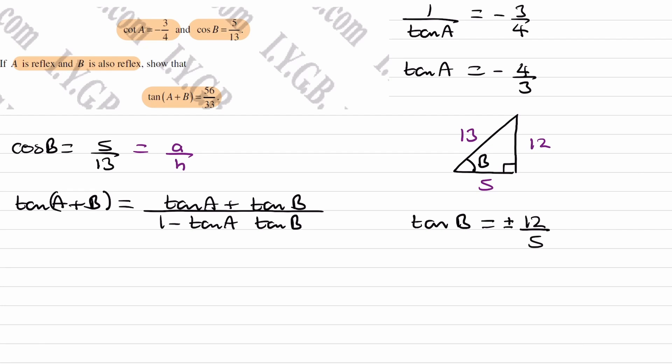To work that out, we have to consider the fact that B is a reflex angle, so that means that B is between 180 and 360. And if we consider a tan graph, it's a very rough sketch. Here is 90, here is 270. So this is what a tan graph looks like between 0 and 360.